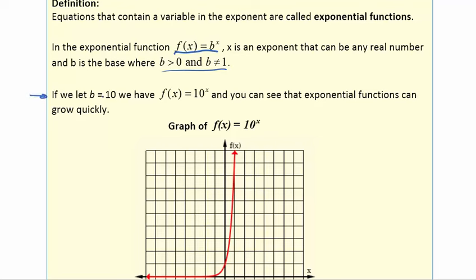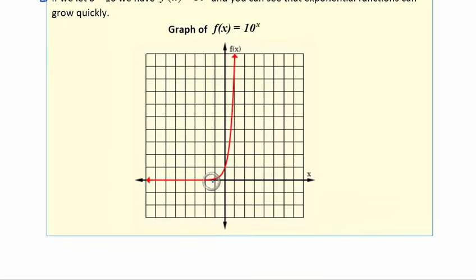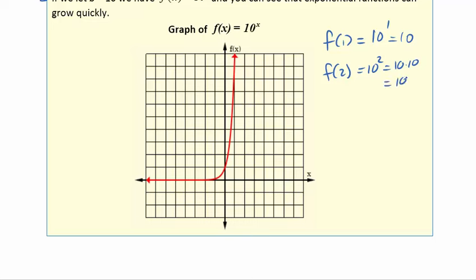If we let the base b equal 10, our exponential function looks like f(x) = 10^x. You can see that exponential functions can grow very quickly. When x = 1, f(1) = 10. When x = 2, f(2) = 10^2 = 100. So with just an x value of 2, the function value is already up to 100.